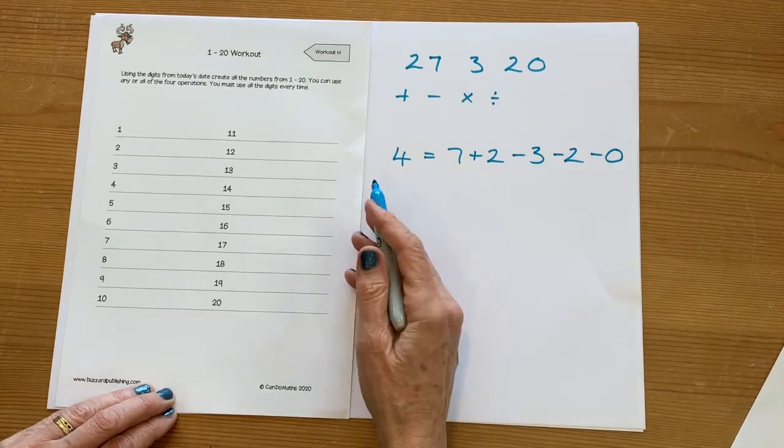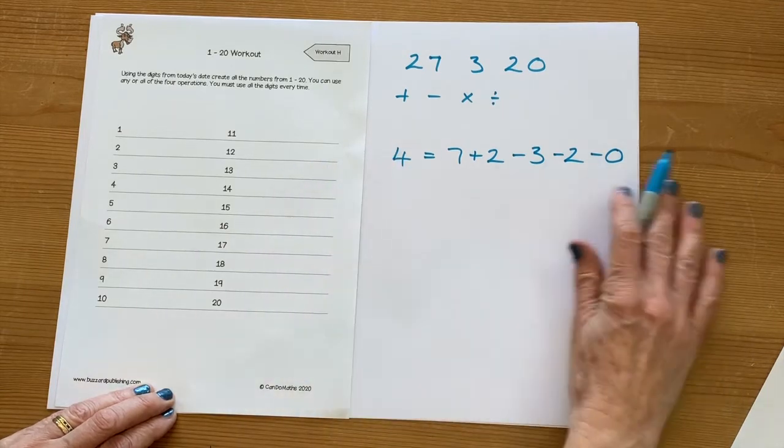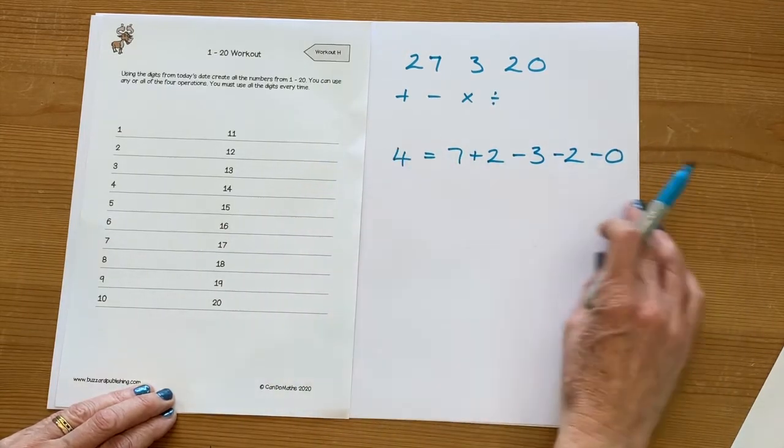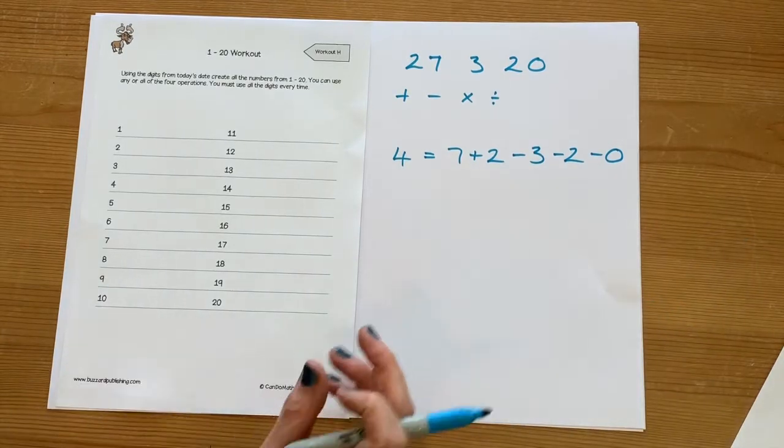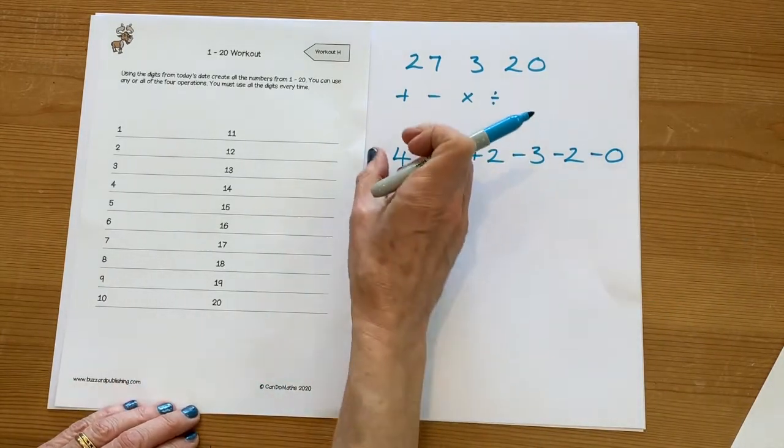So some calculations we can just use all the digits sort of in a row and do almost like a list. Sometimes you might want to make two numbers first out of different digits.